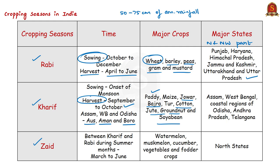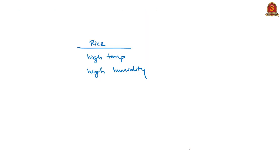There is one more short season called zaid. In between rabi and kharif seasons, zaid is a short season during the summer months. Important crops grown in zaid season include watermelon, muskmelon, cucumber, vegetables and fodder crops for animals. So we saw about the major cropping seasons of India: rabi, kharif and zaid.